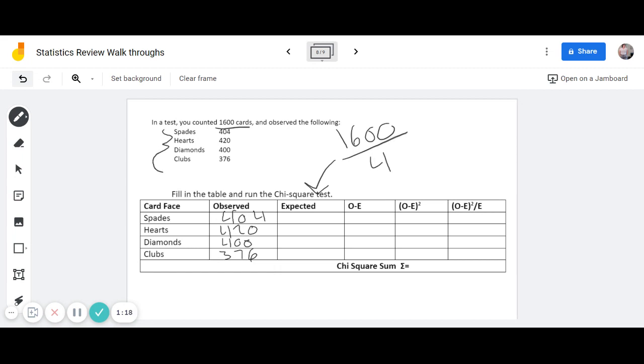which is the total number of outcomes that we have. And that will give us 400, right? So all of our expecteds are going to be 400.